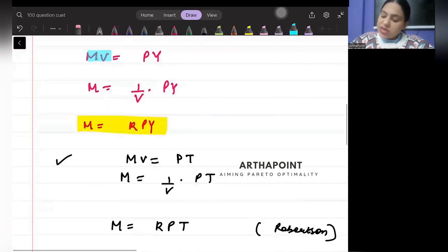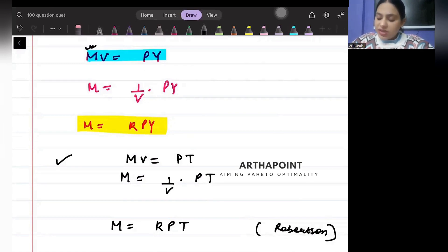And then he wrote MV = PY, and he said the amount of money is proportionate to the nominal GDP of the economy.